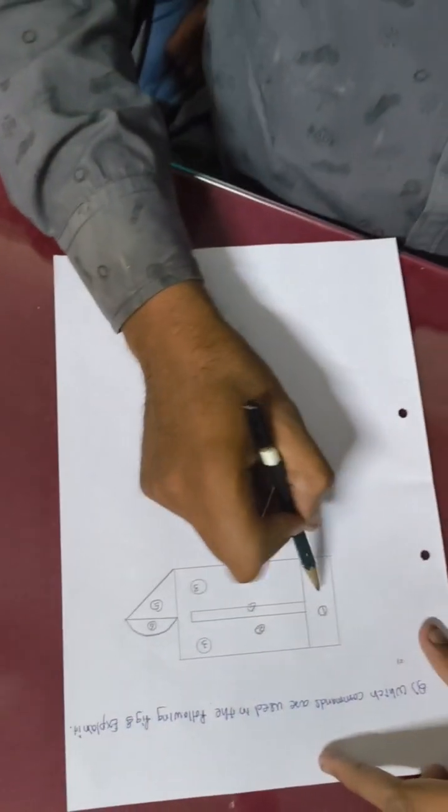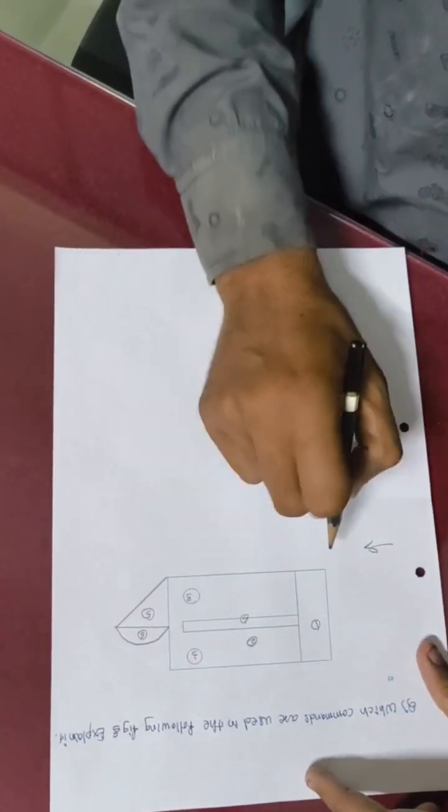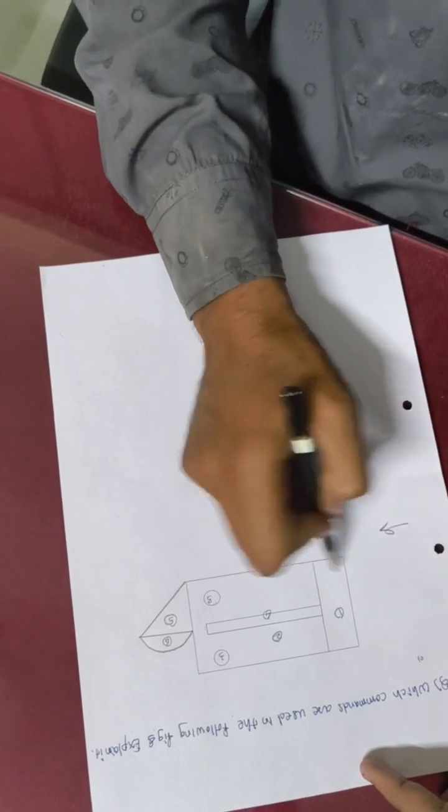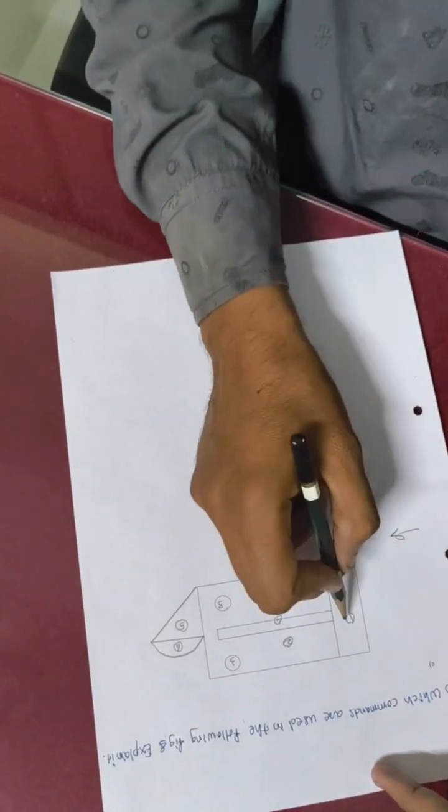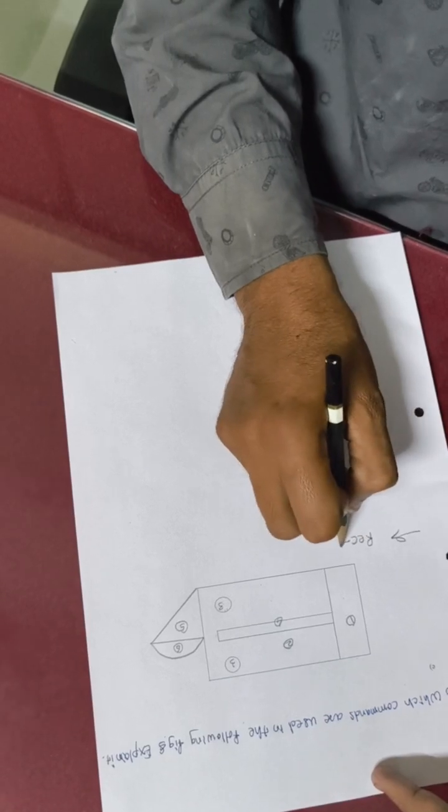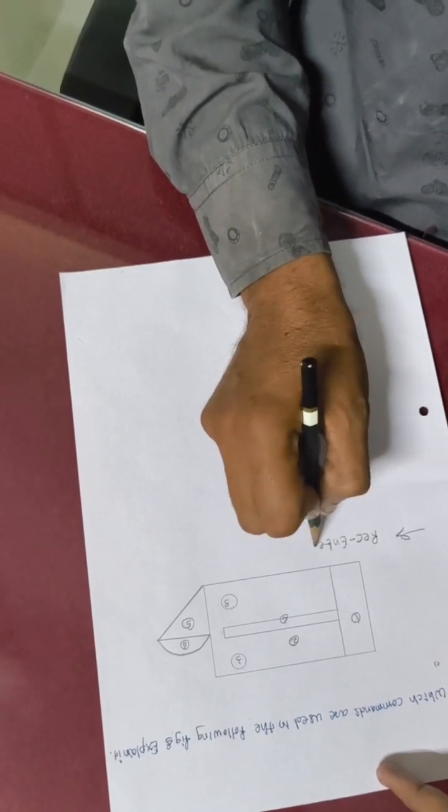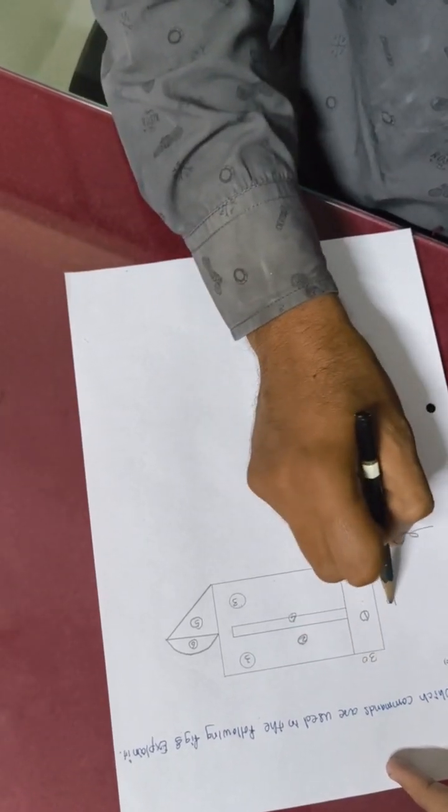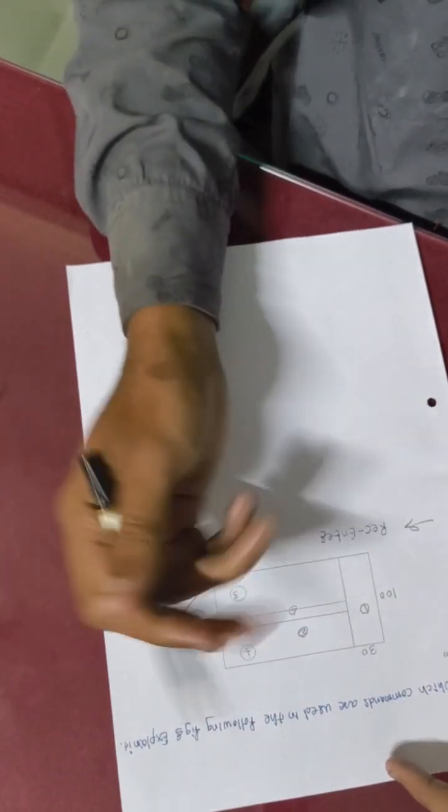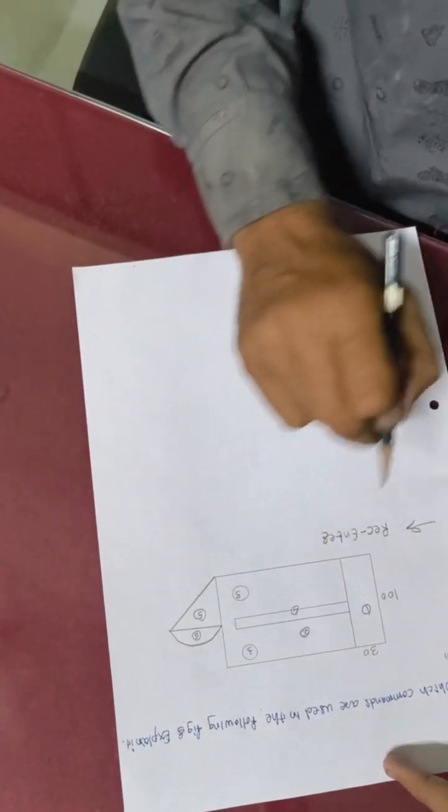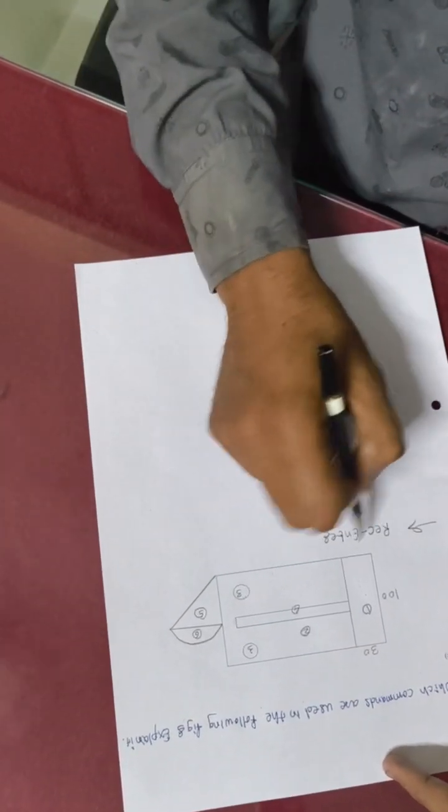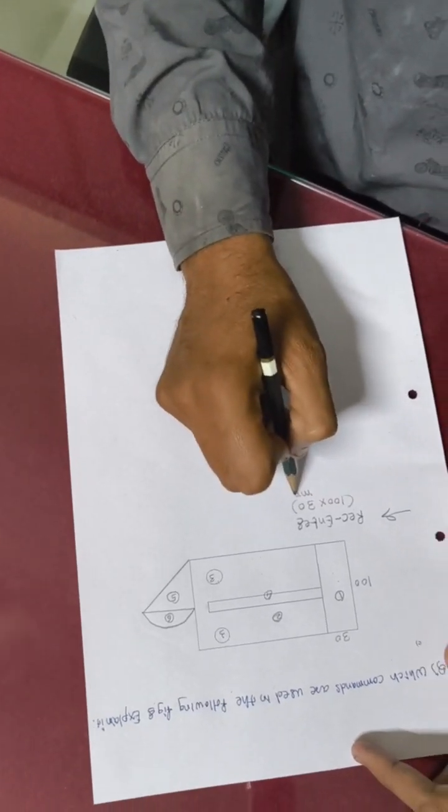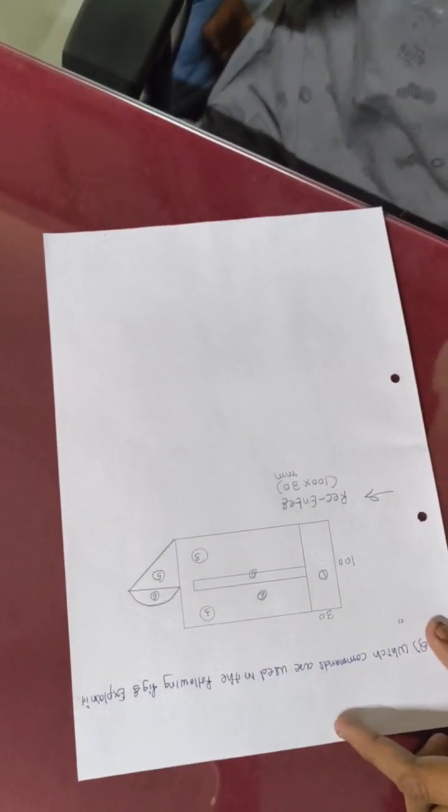Different types of commands are used for the first figure or first section. We can use either rectangle command or line command. If you enter REC and enter, this is your rectangle command. This dimension is 30mm and this dimension is 100mm. Choice is yours - you can put values according to your assumptions. Rectangle dimensions: 100 into 30. All dimensions are in mm, so don't mention mm.